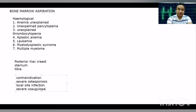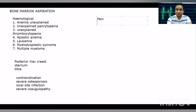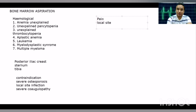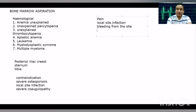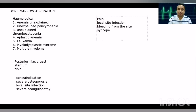Complications of bone marrow aspiration are not commonly seen, but pain is one important complication that patients frequently complain about. Local site infection can occur if the site is not properly disinfected. Bleeding from the site is another possible complication. Some patients may also go into syncope due to the pain associated with the procedure.